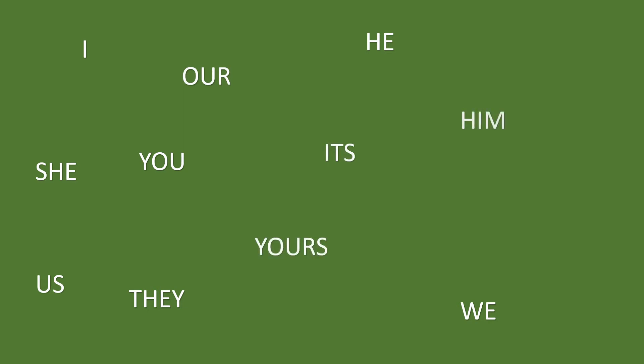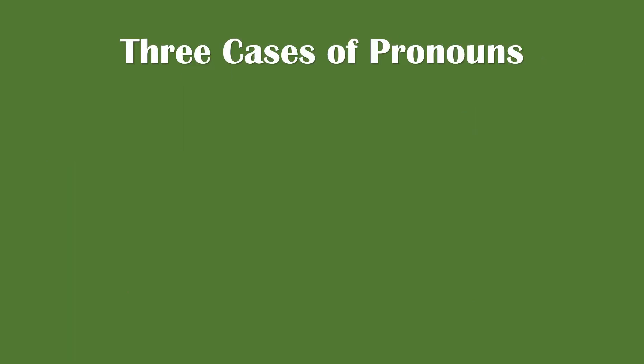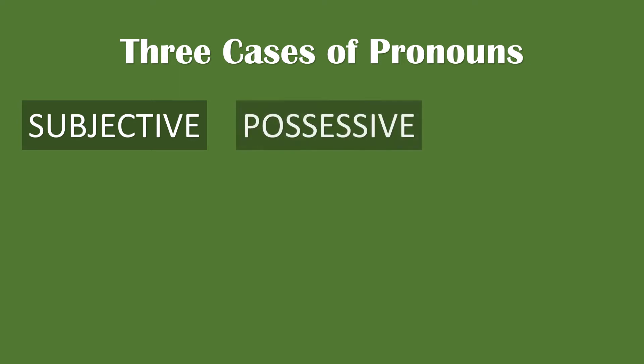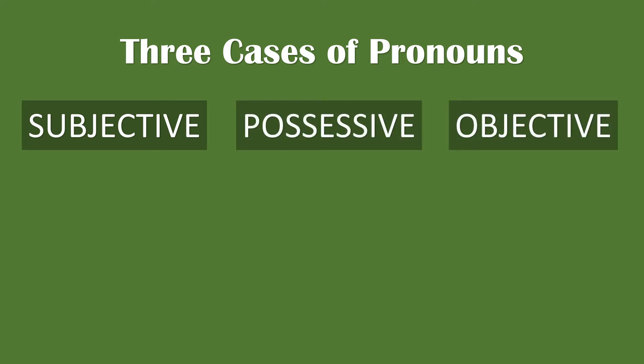Here is the list of pronouns that we will be using in the entire lesson. Pronouns have three cases, which indicate how a pronoun is related to the words it is used with. The three cases are subjective — sometimes called nominative — possessive, and objective. We're going to discuss first the subjective case of pronouns.